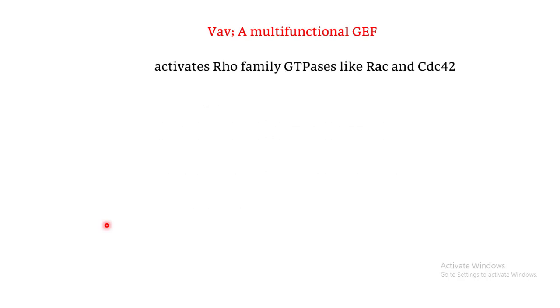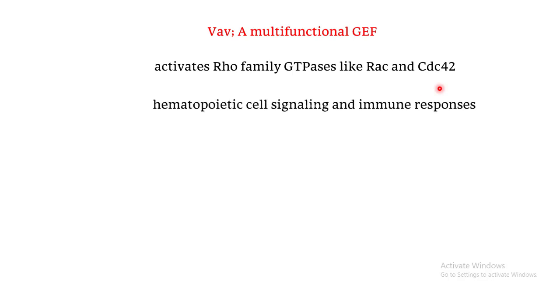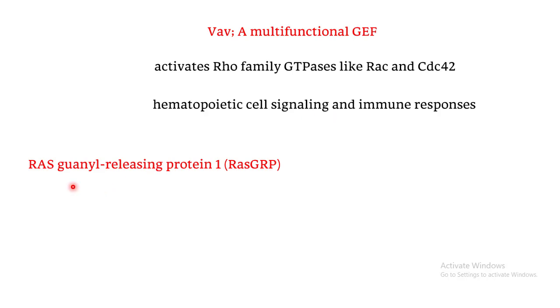Another important example is WAVE, a multifunctional GEF that activates the RHO family GTPases such as RAC and CDC42. When these are activated, they are very important in hematopoietic cell signaling and immune responses.